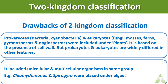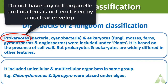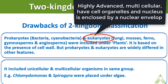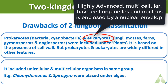To better understand this, we should first understand what prokaryotes are. Prokaryotes are very simple beings without any particular cell organelle — their nuclear content is not enclosed by a nuclear envelope. They include bacteria and cyanobacteria. Eukaryotes, on the other hand, are highly advanced multicellular organisms like fungi, mosses, and ferns, which have an intact cell wall and well-defined organelles, and their nucleic acid is enclosed by a nuclear envelope.